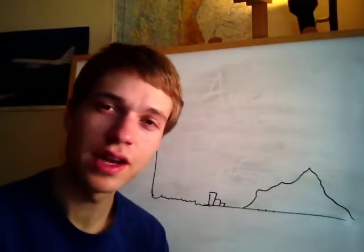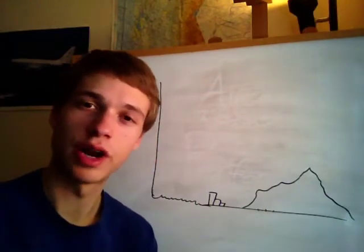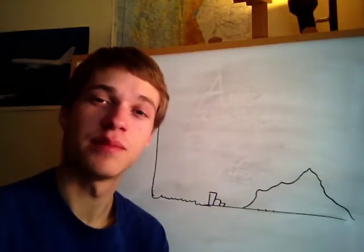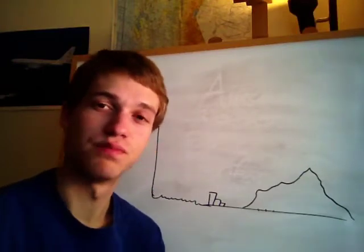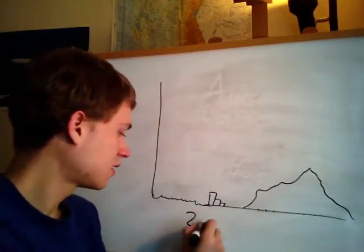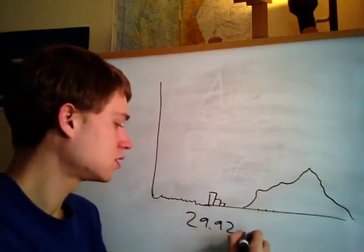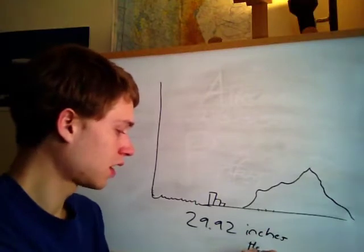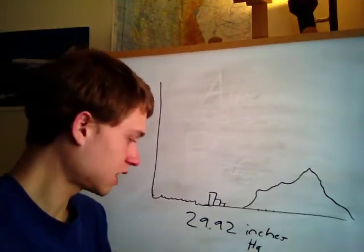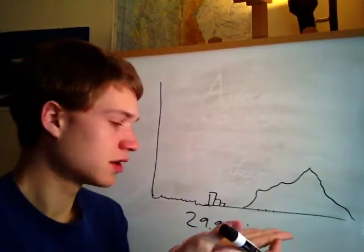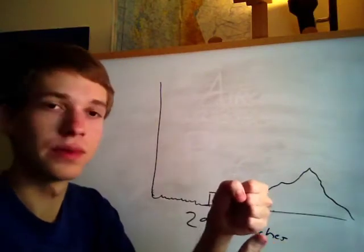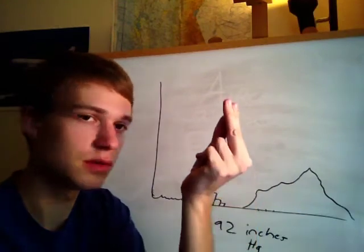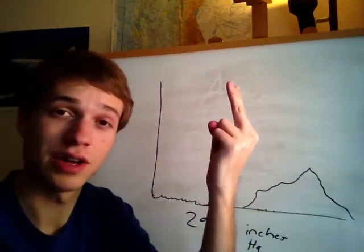How much pressure is at the very bottom of the atmosphere when we're at sea level? On a standard day, in standard conditions, the amount of atmospheric pressure is 29.92 inches of mercury. That's because if you could take a dish of mercury and put a hollow tube with a vacuum in it, the atmospheric pressure would push the mercury in that tube up 29.92 inches.